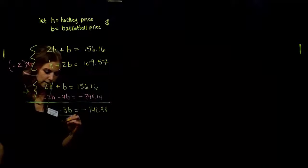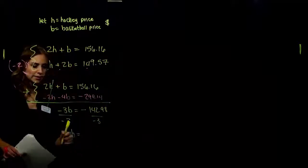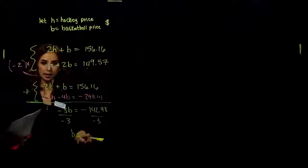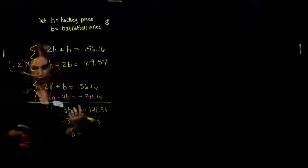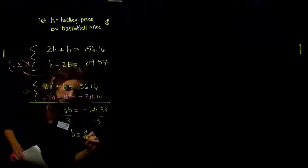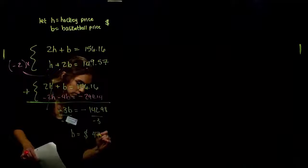And now we have an equation just with one variable that we can solve. We'll divide both sides by negative 3. So our B value, negative divided by negative, is a positive. Okay, they wouldn't pay us to take the tickets. We have to pay for them. What is the price for a basketball ticket? 4766.